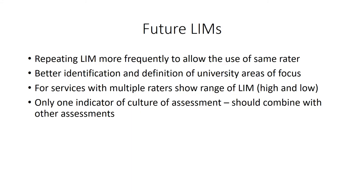In future administrations of library impact maps, re-administration should occur more frequently than every six years, which will allow the use of the same raters in many instances. There also needs to be better identification and definition of university areas of focus. For services with multiple raters, we need to show both the high and low ratings to create a range instead of just using the high. It is also recommended that the library impact map be combined with other assessments, as it is only one indicator of a culture of assessment.